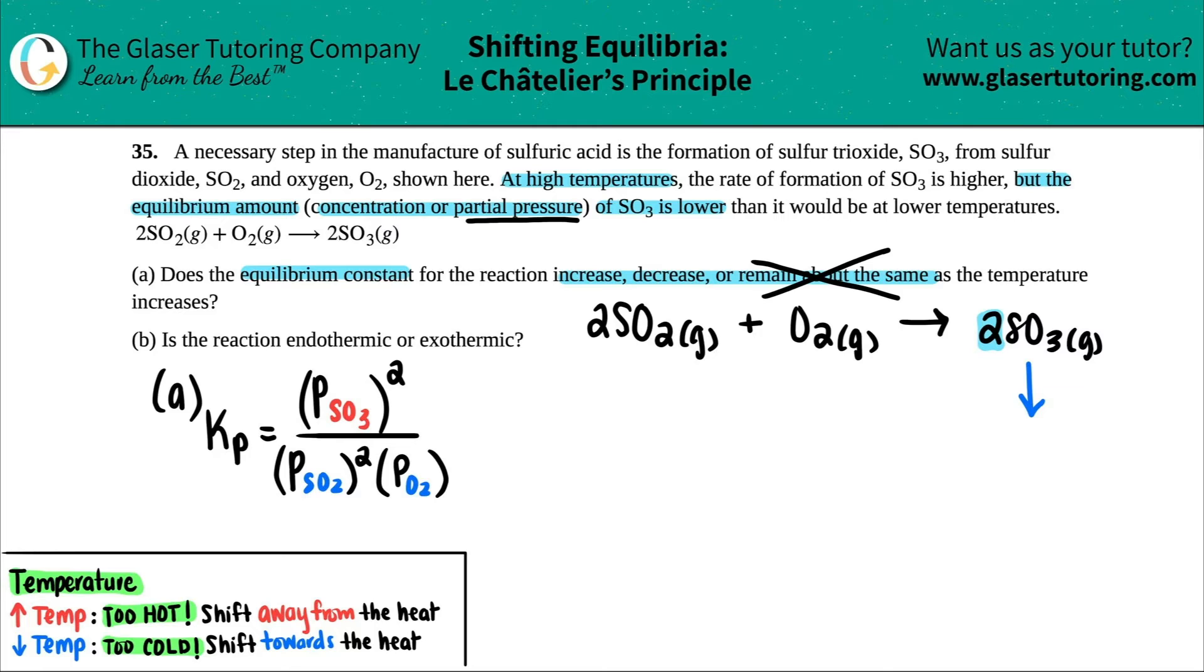So they said that at higher temps, the equilibrium amount of SO3 is lower. So as you're raising the temperature, your partial pressure of SO3 will drop. So take that. If this number is dropping, just like they said, it said that it was lower, I know that this numerator is going to drop. So maybe I'll just erase this and just put a decrease. This is dropping.